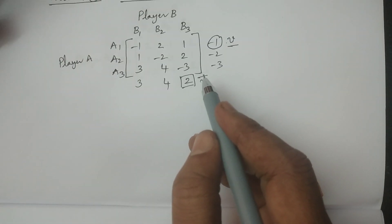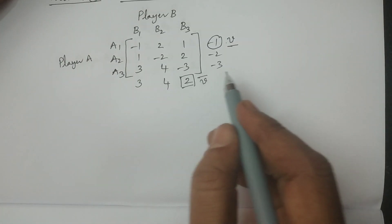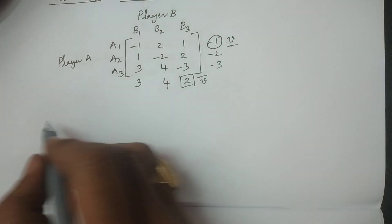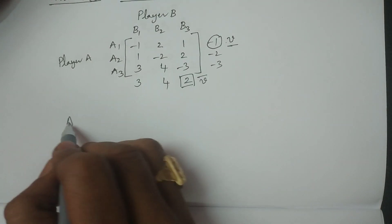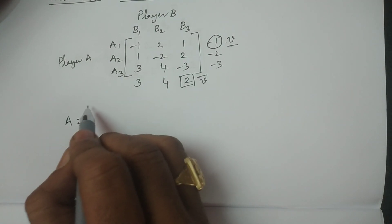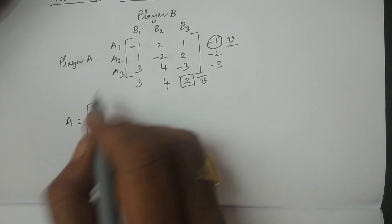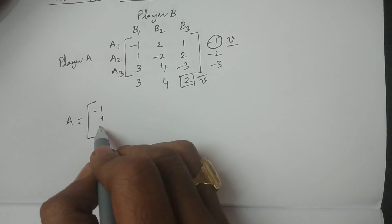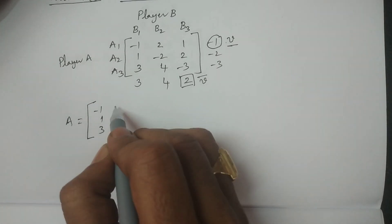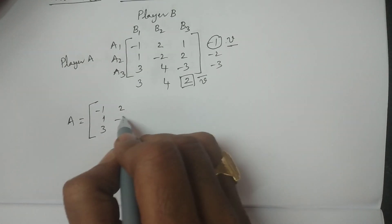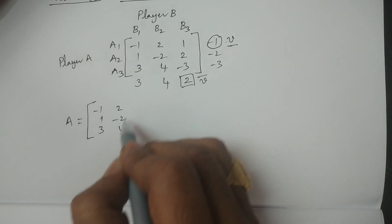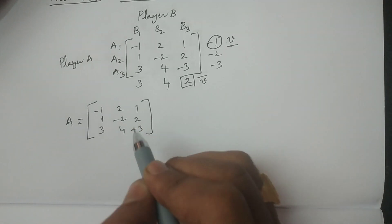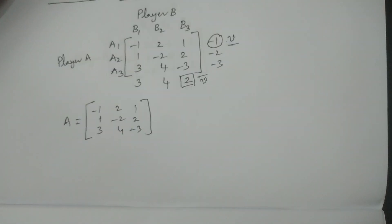Hence we can continue. Let us consider A equal to the matrix: minus one, one, three; two, minus two, four; one, two, minus three. Consider this as matrix A.